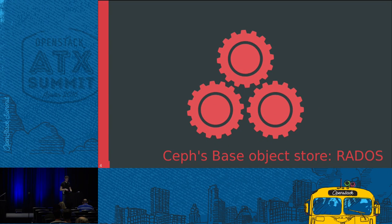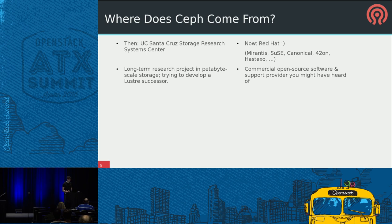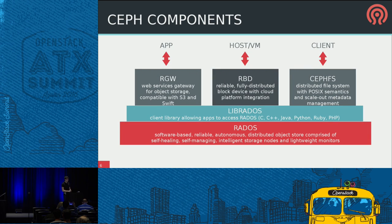Ceph is built on top of the Reliable Autonomic Distributed Object Store. It was a long-term research project at UC Santa Cruz, where Sage got his PhD thesis, and is now supported by Red Hat and a whole bunch of other people. In the Ceph project, we have RADOS at the bottom — that's our base storage layer that provides all the primitives all the other projects use to build up their services.